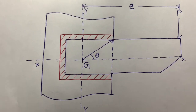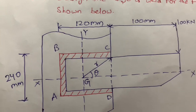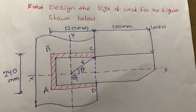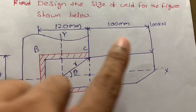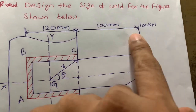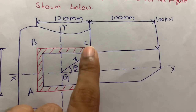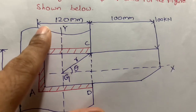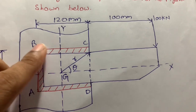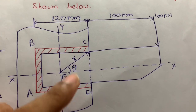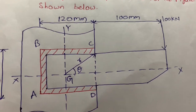Now I am going to solve one example problem using the same diagram with allotted values. The problem is: design the size of the weld for the figure shown. The dimensions are 120 and 100, and we need to calculate the eccentricity E. The load P is 100 kilonewtons. The weld lengths are 120, 240, and 120. We need to calculate the size of the weld, not the length.